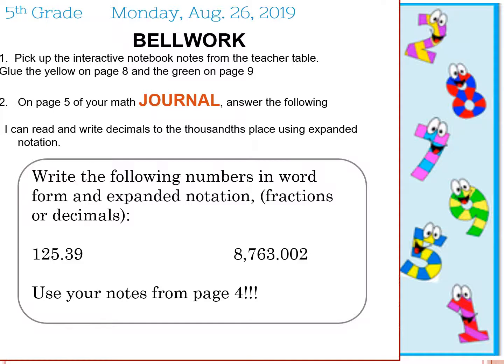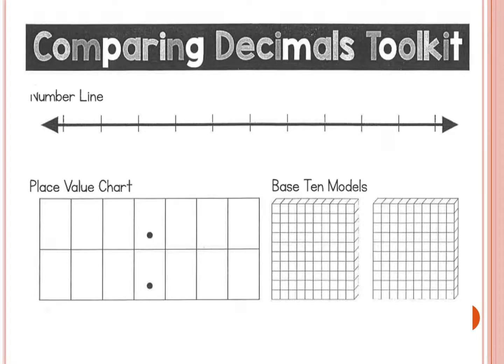Let's look at some of the tools that we use in reading and writing numbers or decimals to the thousandth place using expanded notation. Some of the tools we discussed in class that you will keep in mind as a strategy are a number line, a place value chart, and base 10 models. We are going to focus more on the base 10 models today because that is what we did in class.